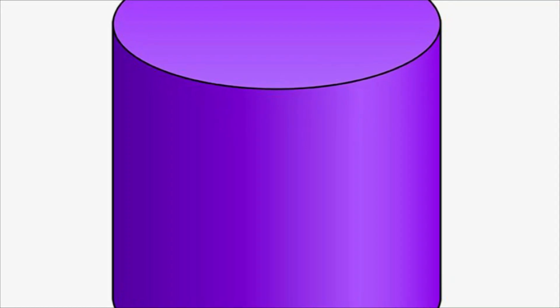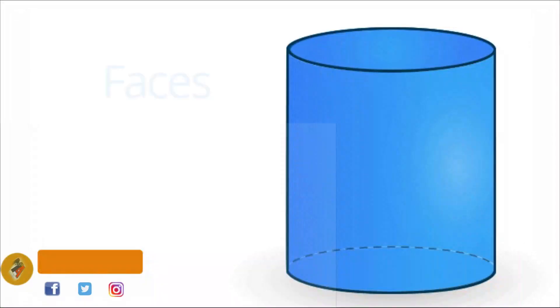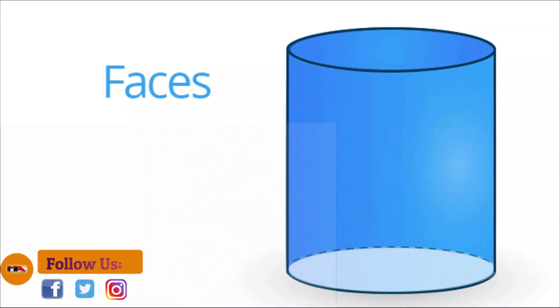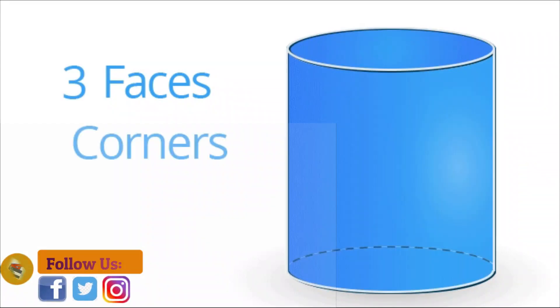A cylinder is a three-dimensional geometric shape that consists of two parallel bases that are circular in shape and a lateral surface that connects the two bases.